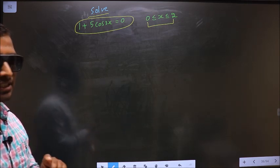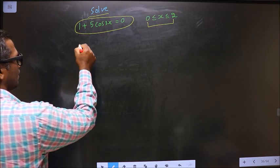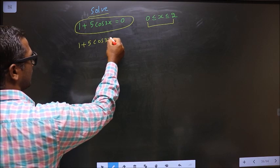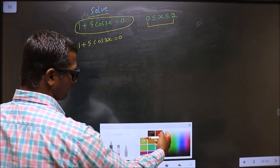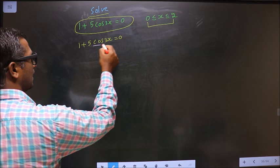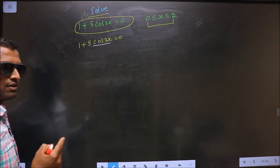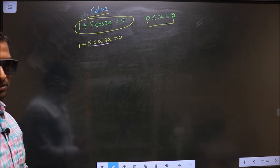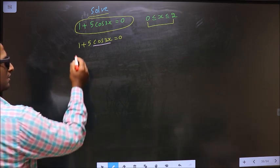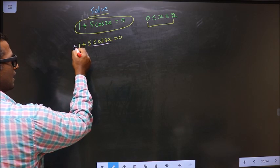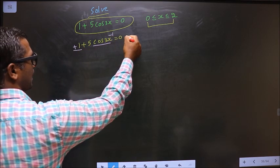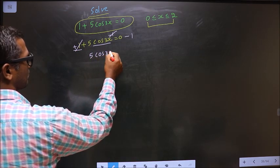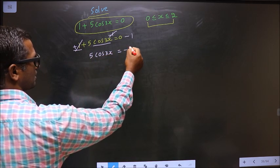Now the given equation is 1 plus 5 cos 3x equal to 0. Here you have cos, so now you make cos the subject. Remove all the connections connected to cos. First you should remove this plus 1. To remove plus 1 you subtract 1. So you get 5 cos 3x equal to minus 1.